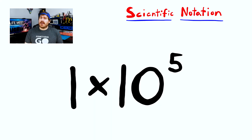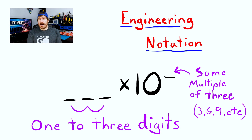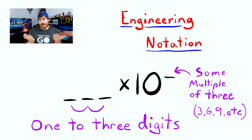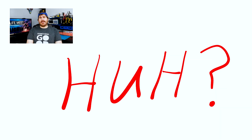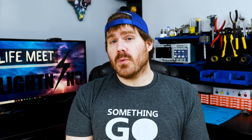Remember that scientific notation follows a convention of having a single digit to the left of the decimal point, then multiplied by some power of 10. Engineering notation is similar, but follows that we have 1 to 3 digits to the left of the decimal, multiplied by some power of 10 in multiples of 3. That's all there is to it. We covered moving the decimal in the last video. With engineering notation, we're simply moving the decimal in multiples of 3.